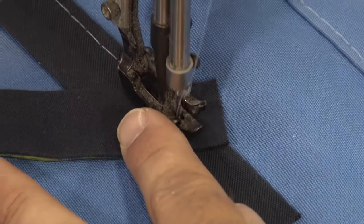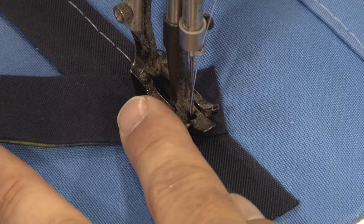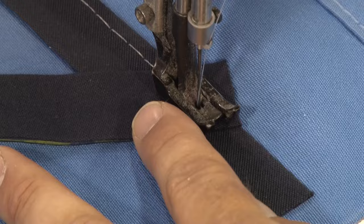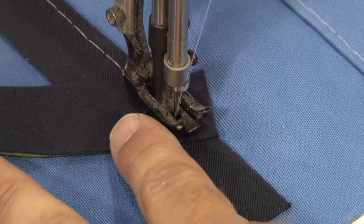When you come to corners you will notice that he will bury his needle, he will lift his foot, he will pivot on the needle and make his turn with the foot up, and then lower the foot and continue sewing.